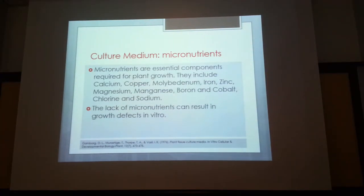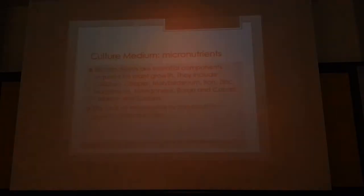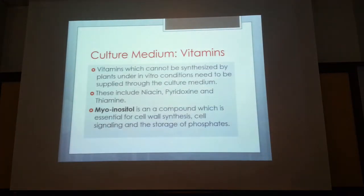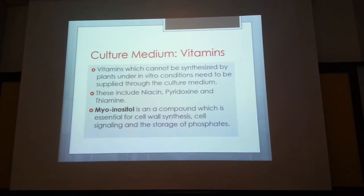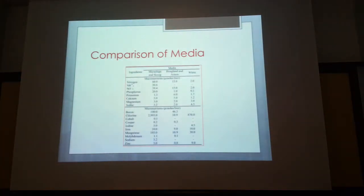You have macronutrients (NPK) and micronutrients for different kinds of plants. If you don't provide micronutrients, you will also have mutations. Vitamins also need to be provided because the plant loses its ability to develop natural compounds when established in vitro. One important compound is myo-inositol, which is a kind of sugar that you need to supply in order to enable the plant to propagate.